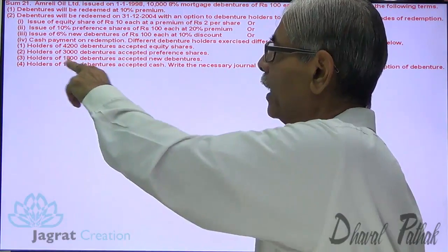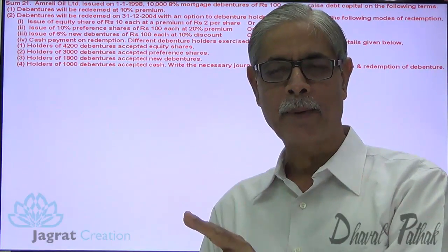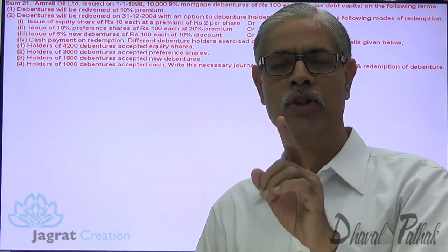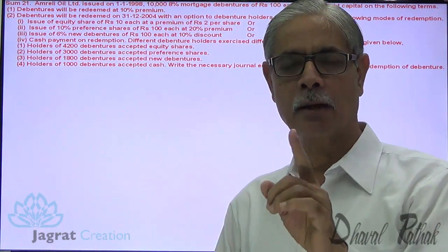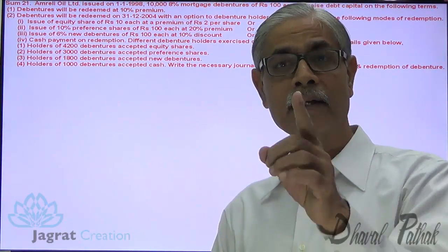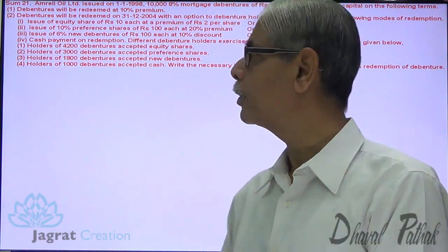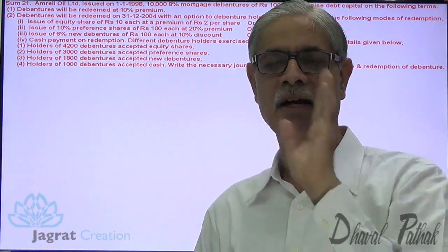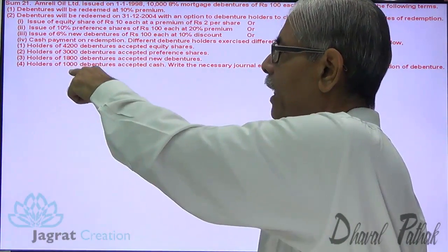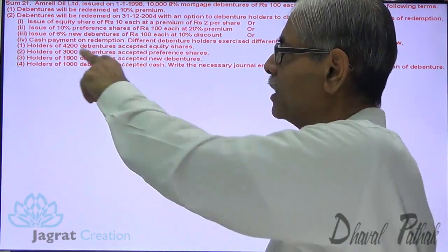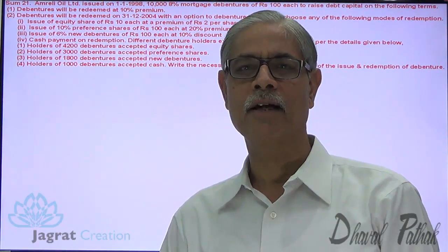1,800 debenture holders accepted new debentures, so they are to be paid at 110 per debenture, total amount payable is 1,800 into 110. That amount will be paid by issue of new debentures at 10% discount, so issue price is 90. Number of debentures to issue: 1,800 into 110 divided by 90. 1,000 debenture holders accepted cash. So 4,200 plus 3,000 plus 1,800 plus 1,000 amounts to 10,000 debentures - this is how redemption of 10,000 debentures has to be made.